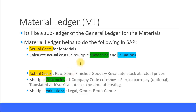For multiple currencies, by default you will have one company code currency and you can have up to a maximum of two additional currencies — this is optional. When postings are made, they are converted into the additional currencies at the historical rate, meaning the currency exchange rate conversion happens at the time of posting and is dependent on the posting date.